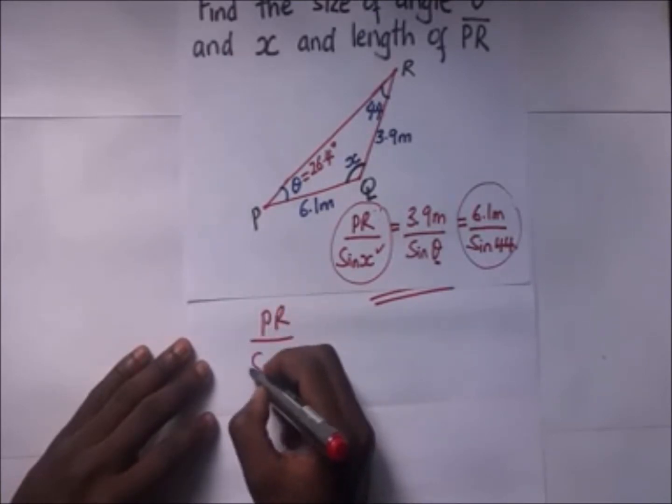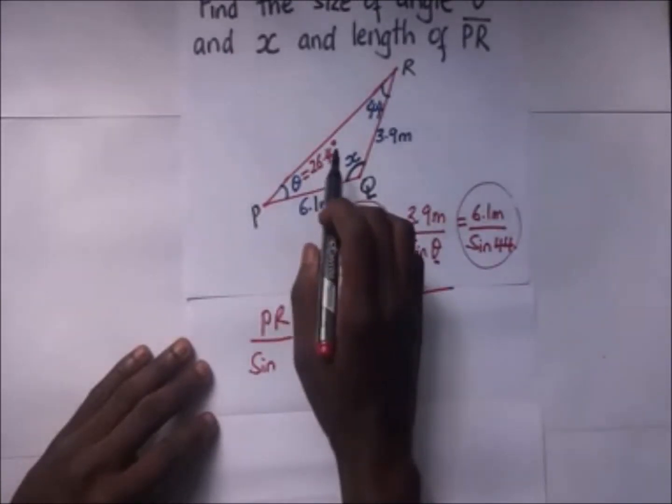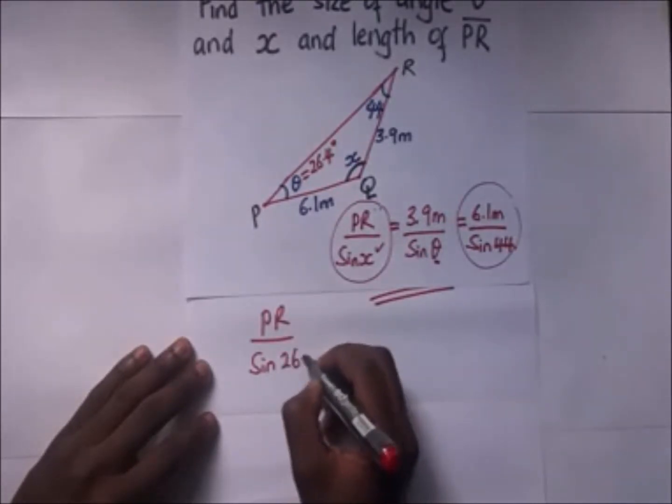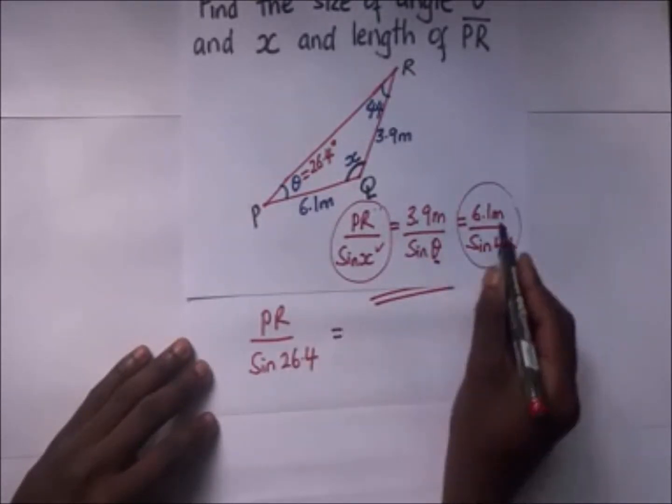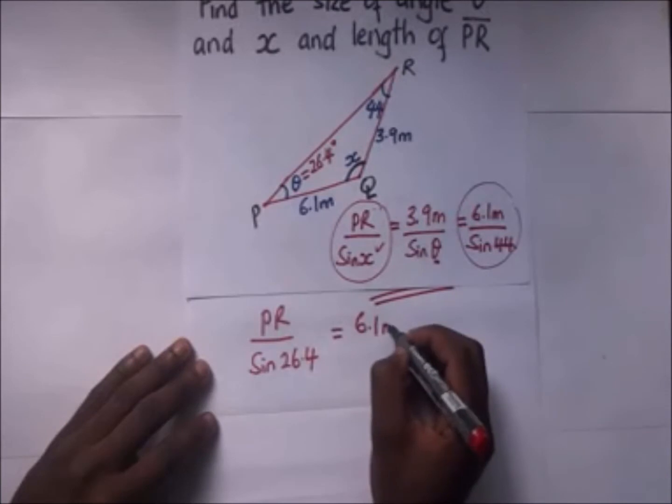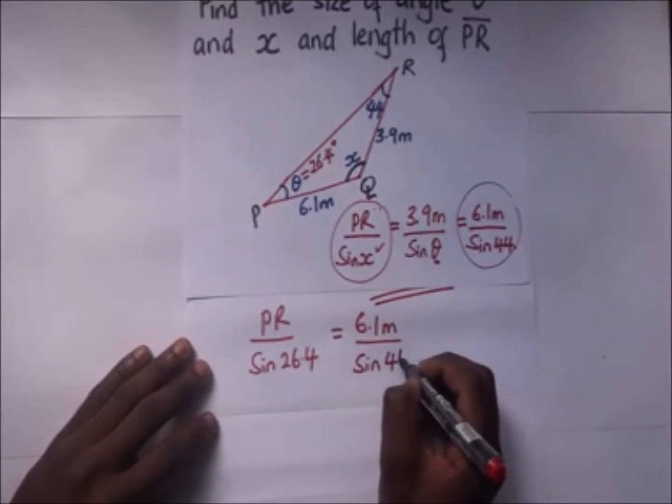PR over sine of x, we got our value of x as 26.4, is going to be equal to 6.1 meters divided by the sine of 44.